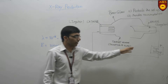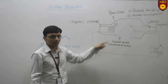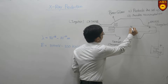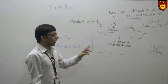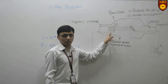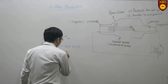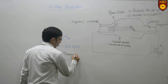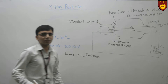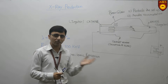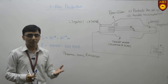When the current starts flowing in the circuit, the cathode gets heated up and produces electrons which move towards the anode and strike it. When the current is switched on, the cathode starts heating and produces electrons through a process called thermionic emission. Thermionic emission is the thermally induced flow of charge carriers from a surface.